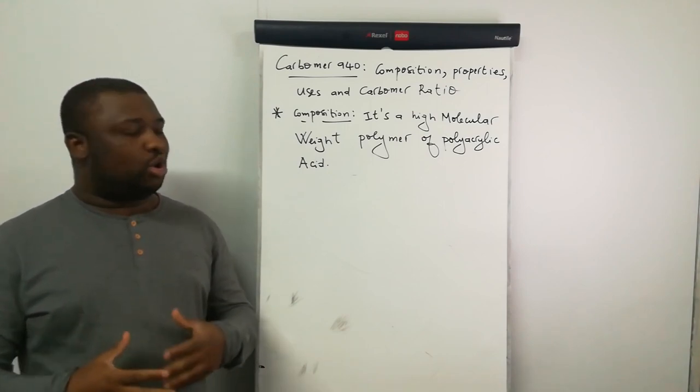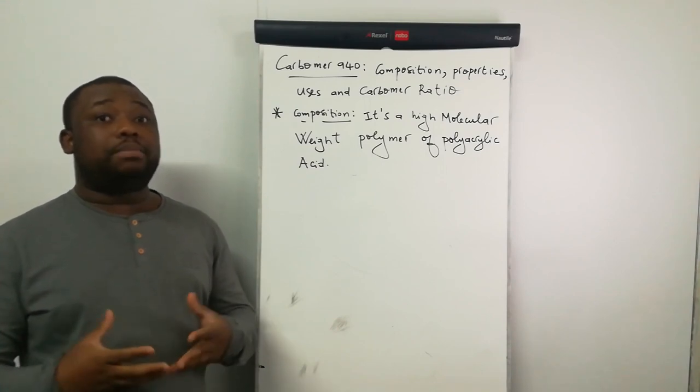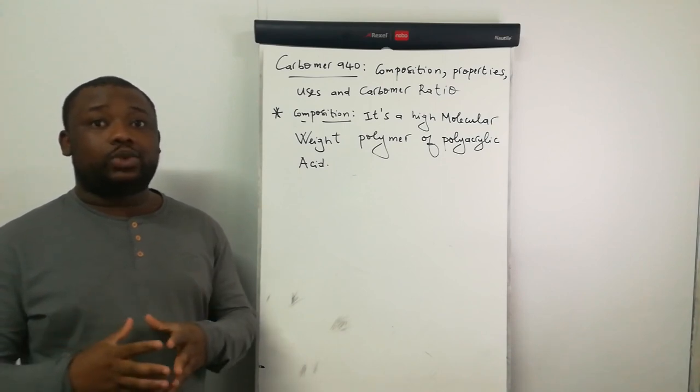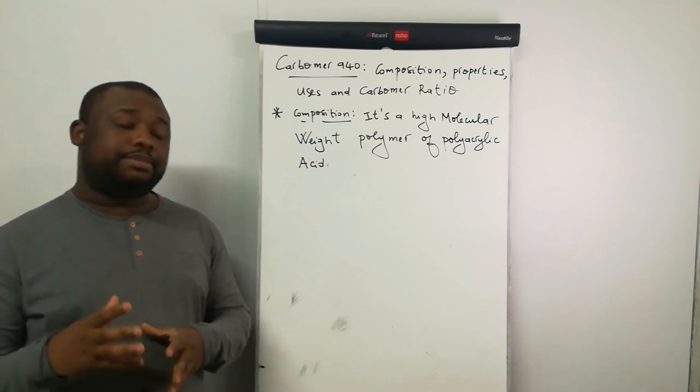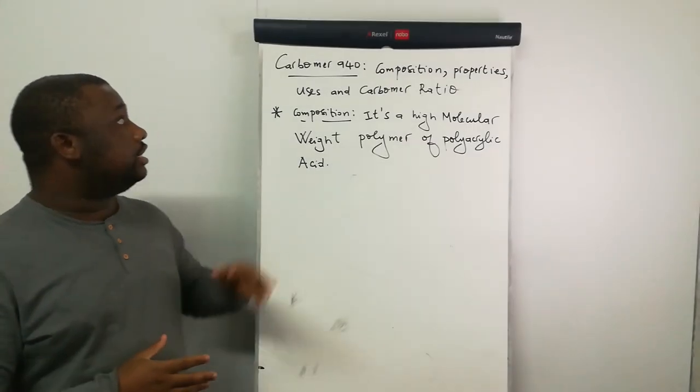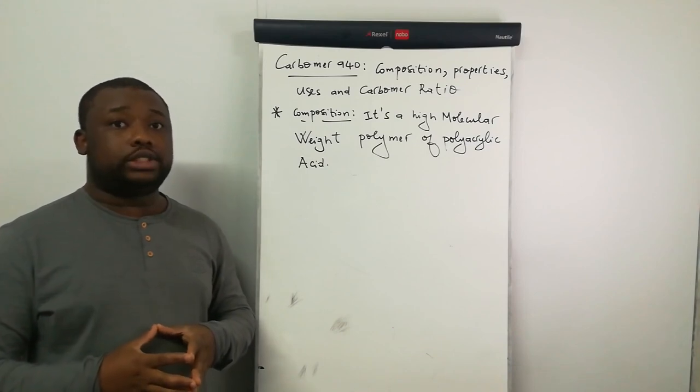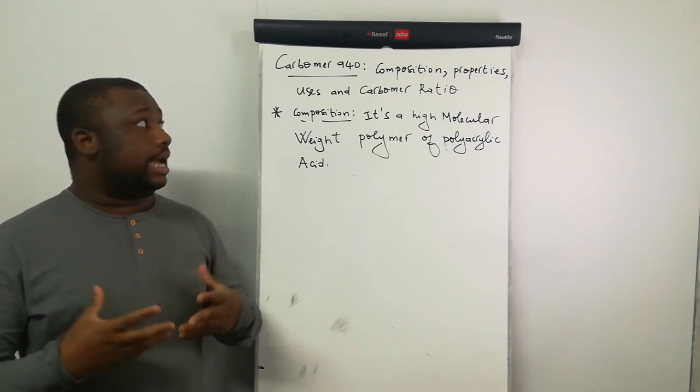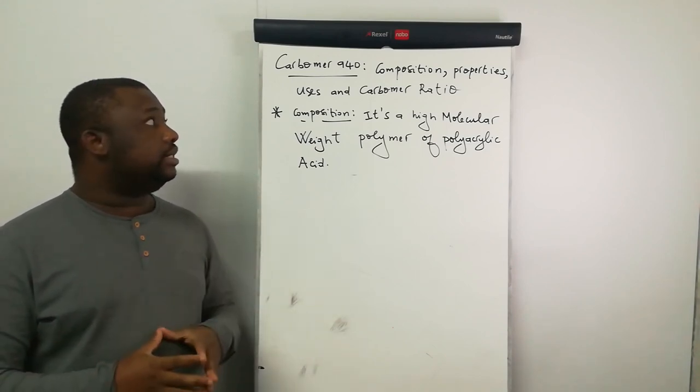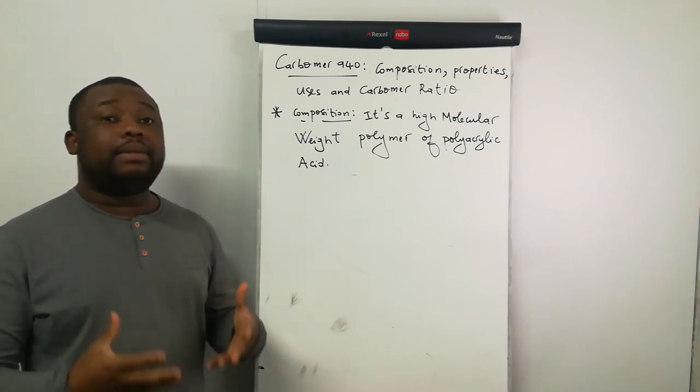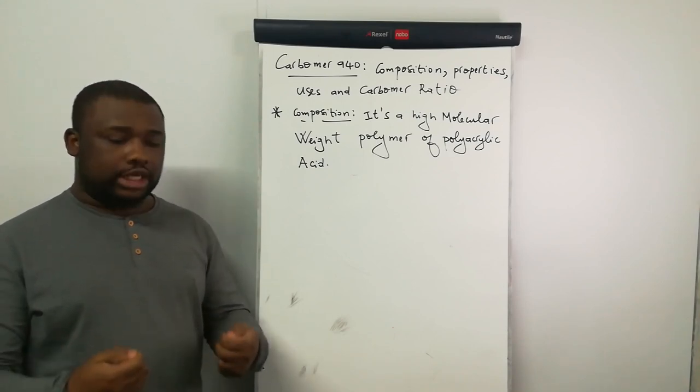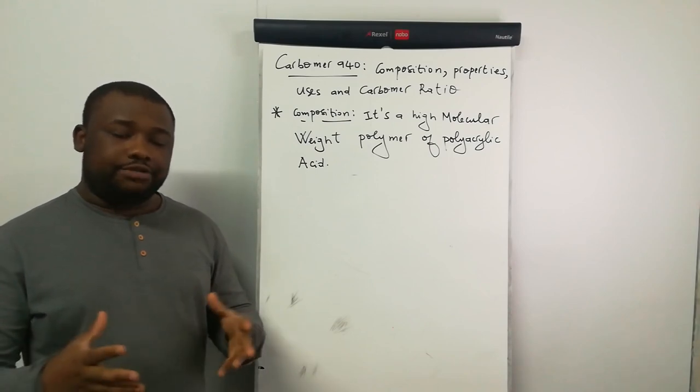Simply put, what makes the hand sanitizer become a gel? The answer to that question is the responsible ingredient that makes your hand sanitizer become a gel is actually the Carbomer 940. As I said, this video will be structured to tell you about its composition, properties, uses, and Carbomer ratio in terms of the amount you need to use into a certain mixture.